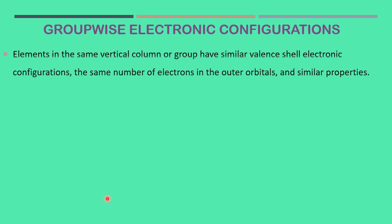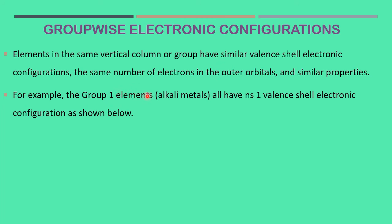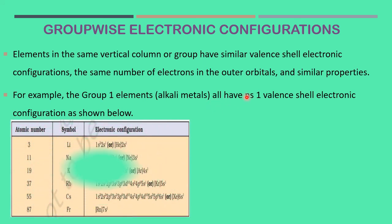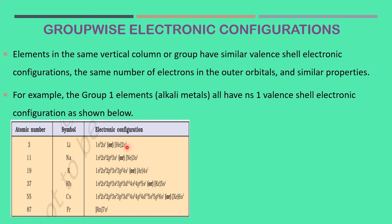Now we study group-wise. The elements in the same vertical column or group have similar valence shell electronic configuration. In a period they don't have similar valence configuration, whereas in the group they have similar valence electronic configuration. Therefore they possess the same properties. For example, group 1 elements, which are called alkali metals, have similar electronic configuration of Ns1: 2s1, 3s1, 4s1, 5s1, 6s1 and so on. They have similar outermost electronic configuration, therefore they are almost chemically same.